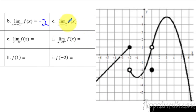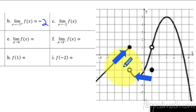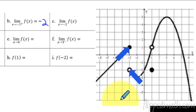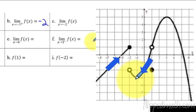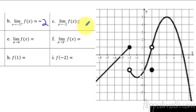Now we approach negative 2 with no little plus or minus, which means from both sides. When approaching from both sides, they have to come together. Since they don't — one side is heading to 1 and the other is heading toward negative 2 — this limit does not exist. DNE is just an abbreviation for does not exist, or undefined.